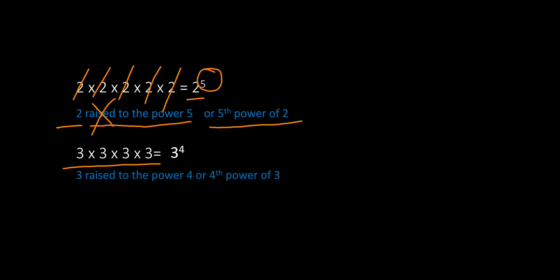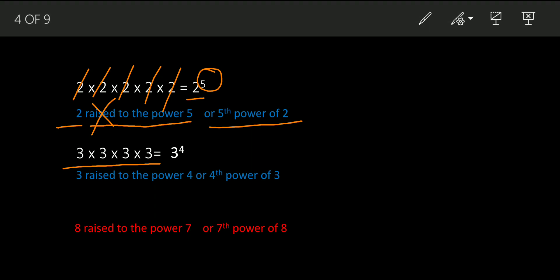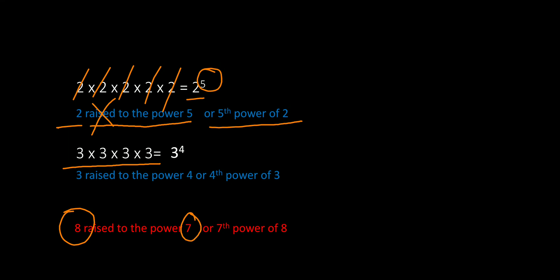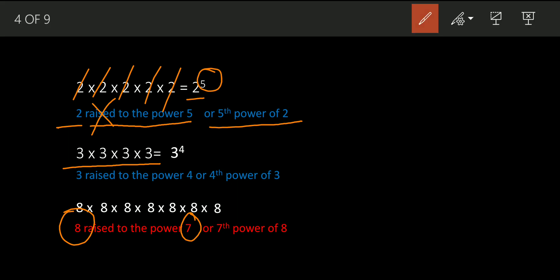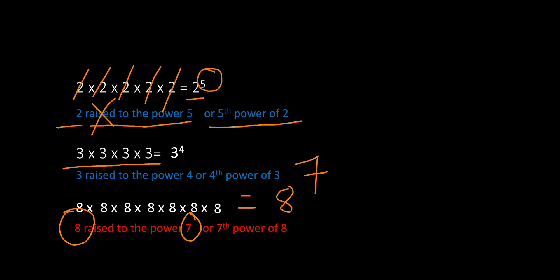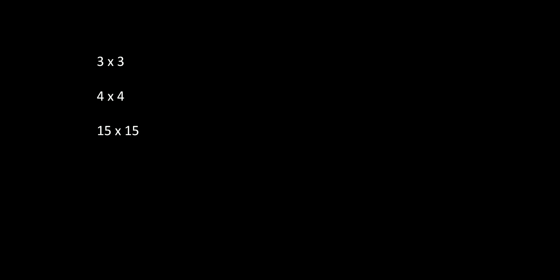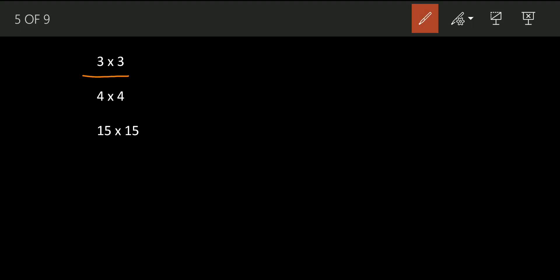We read three raised to the power four as 'three raised to four,' 'three raised to the power four,' or 'fourth power of three.' Now suppose I give you eight raised to the power seven — which number is raised? Eight. How many times? Seven times. So we multiply eight seven times: one, two, three, four, five, six, seven. We write it as eight to the power seven, or eight raised to seven.